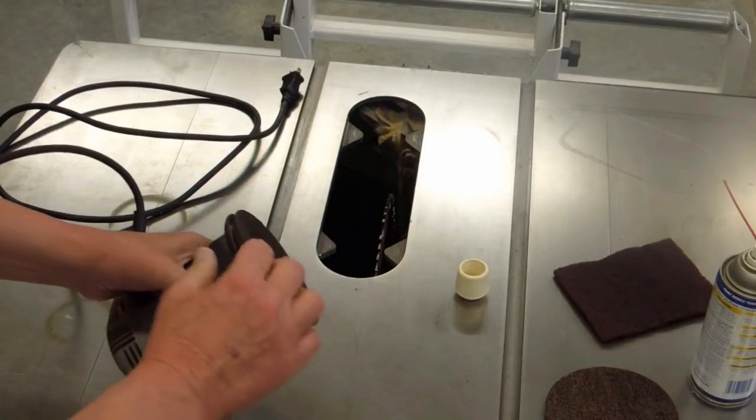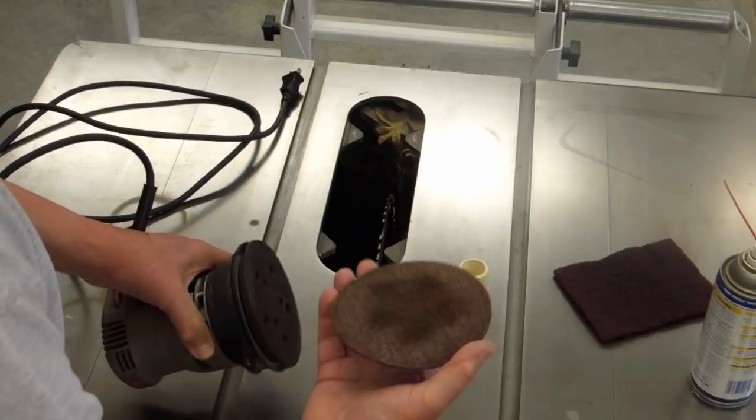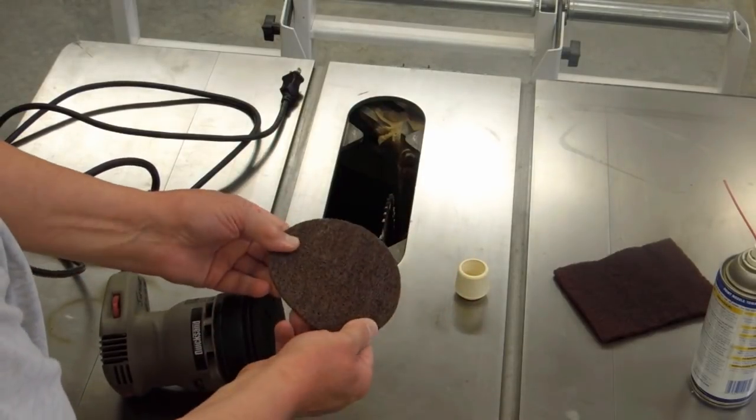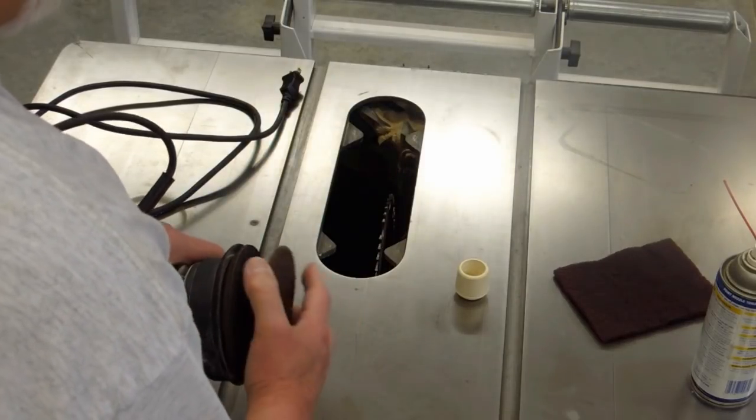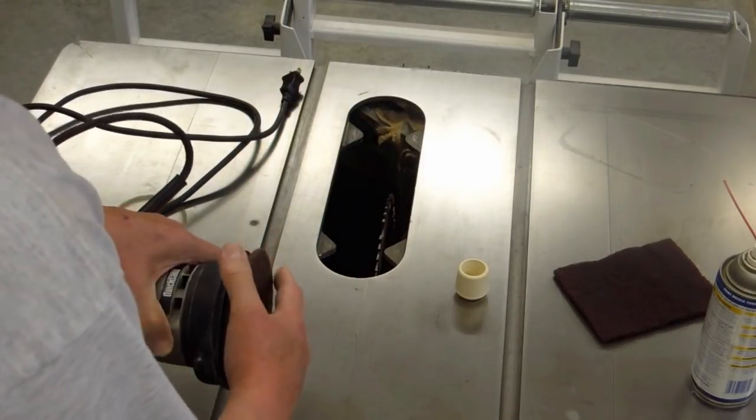This is one where the hook and loop material is almost gone. This is a scouring pad, kind of like Scotch-Brite, but much more aggressive. It's got a hook and loop surface on it.